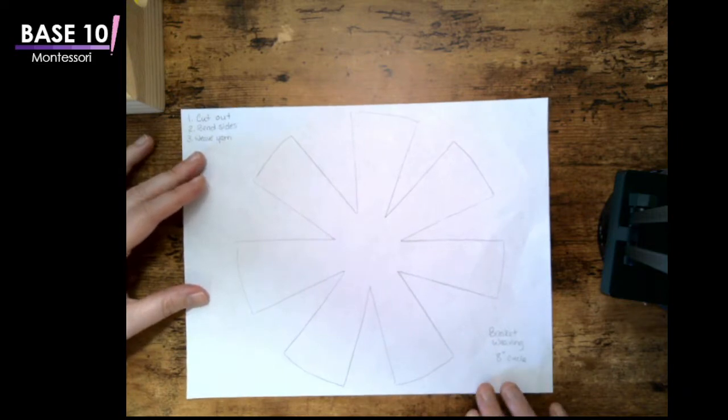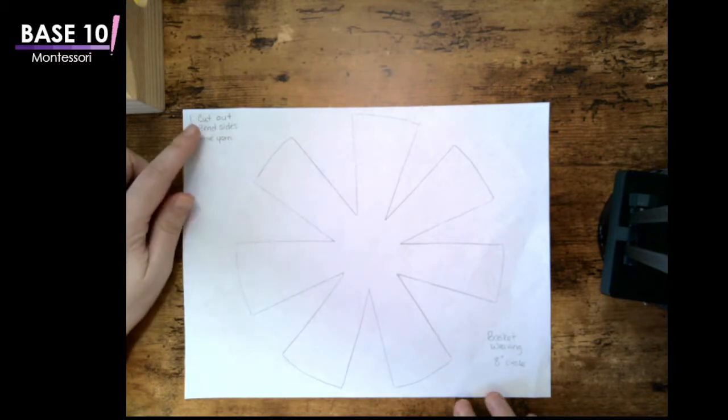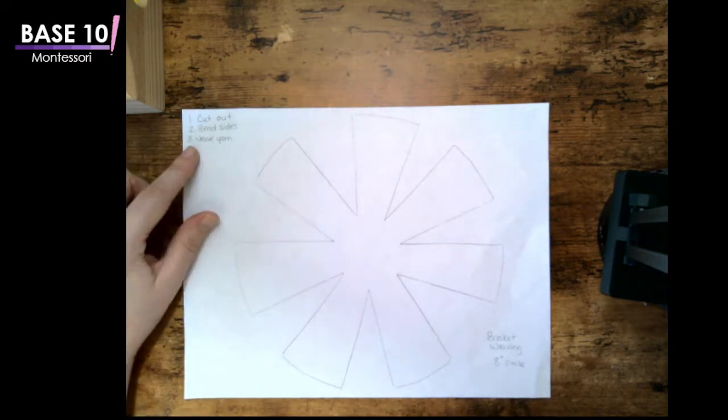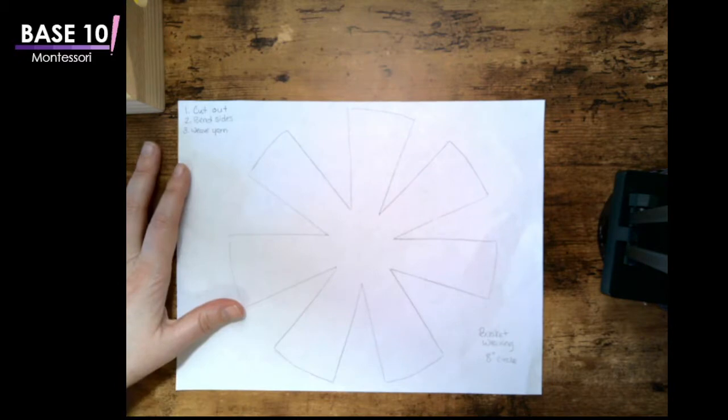And this template is pretty simple. This is the basic directions that I use for sending to my friends, and that's basically step one, cut out the template. Step two, bend the sides up. Step three, weave the yarn. Children need a little more guidance than that, but as an adult, that's pretty much the directions for that.